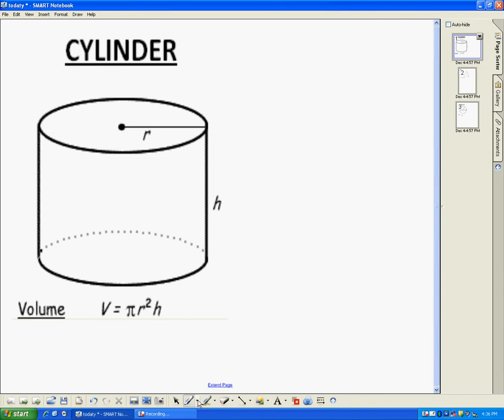So let's say that I gave you a cylinder, and let's say that the radius is 6 meters, which is huge, and the height is 8 meters. And we want to find the volume.